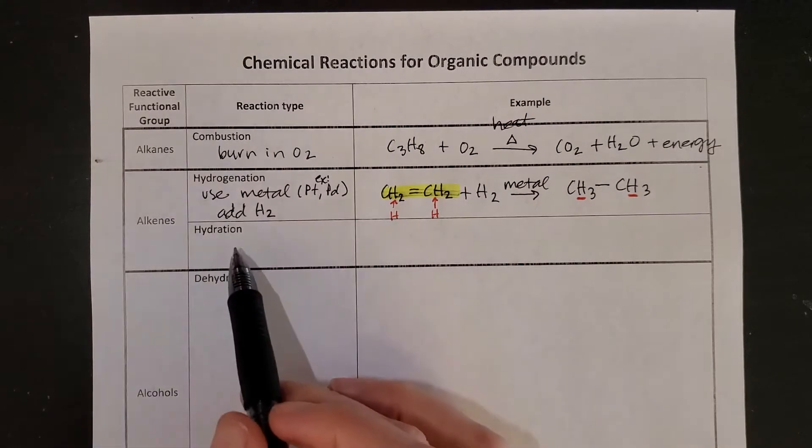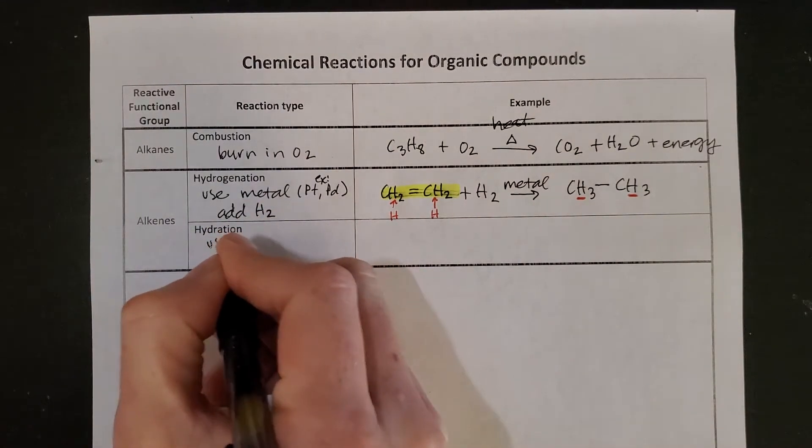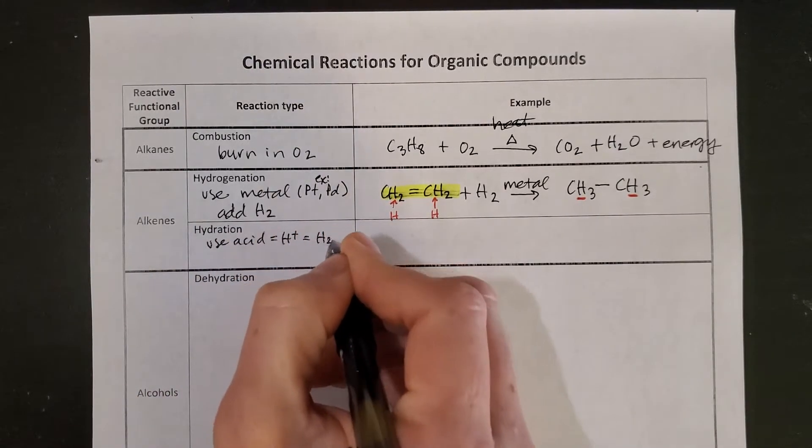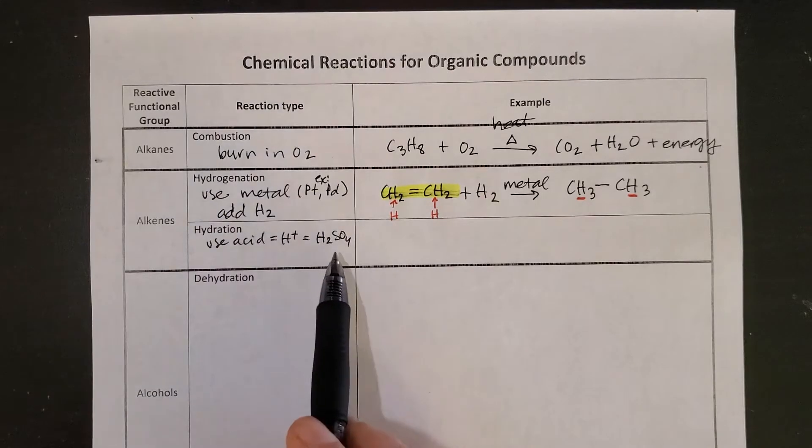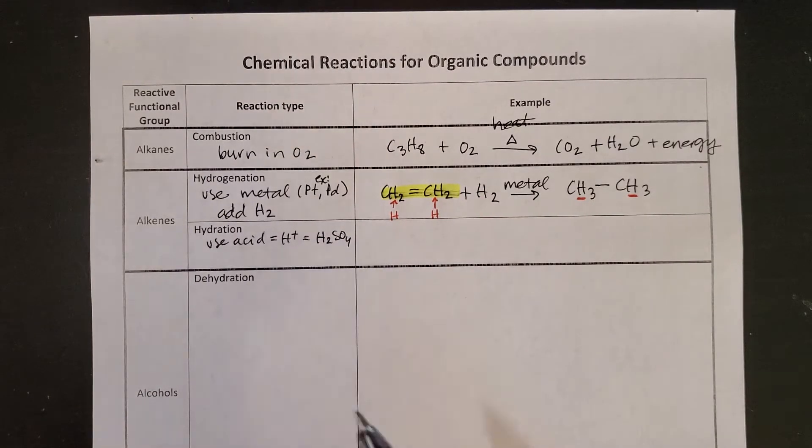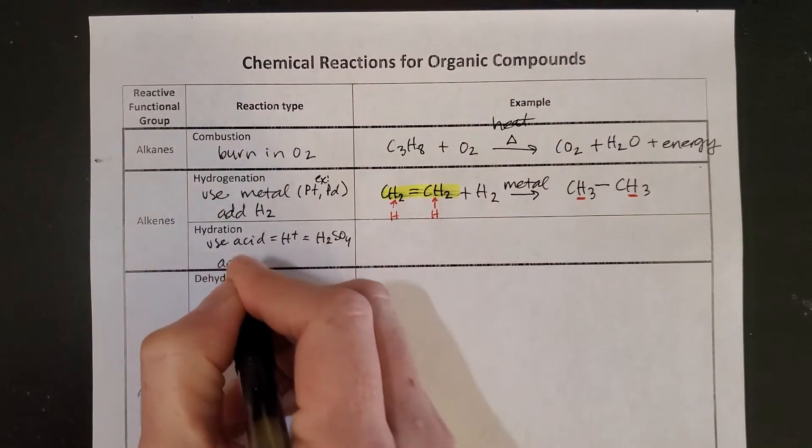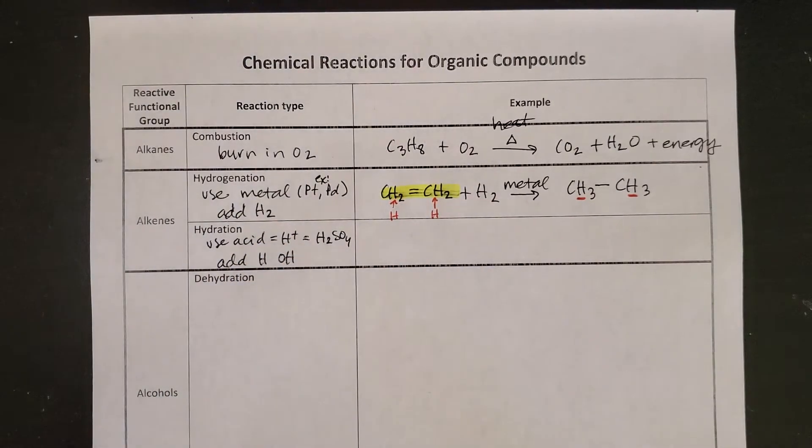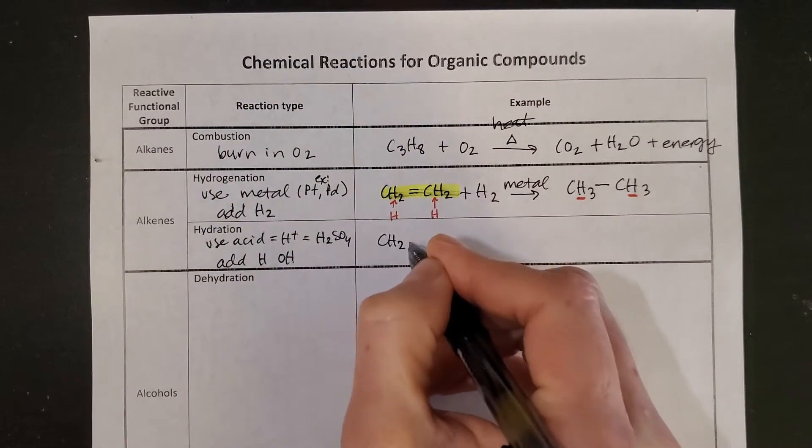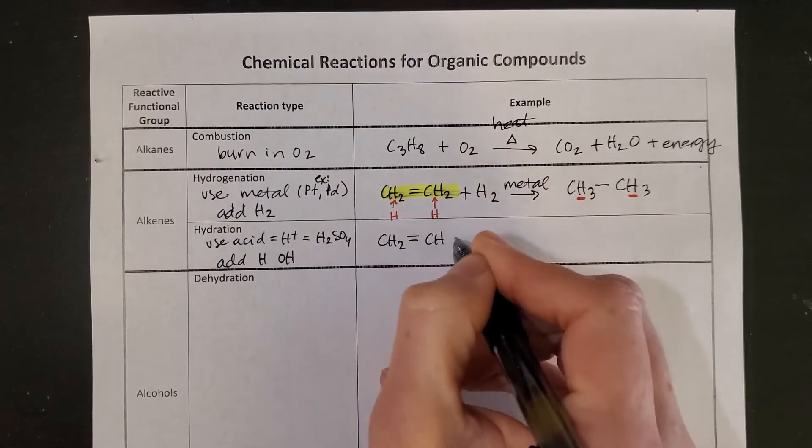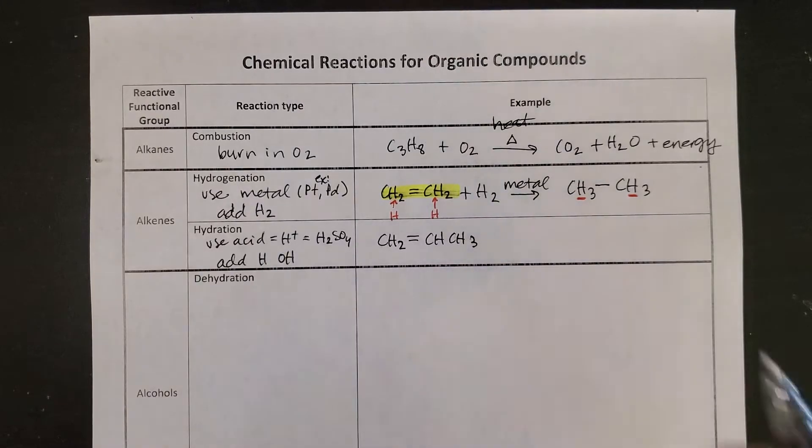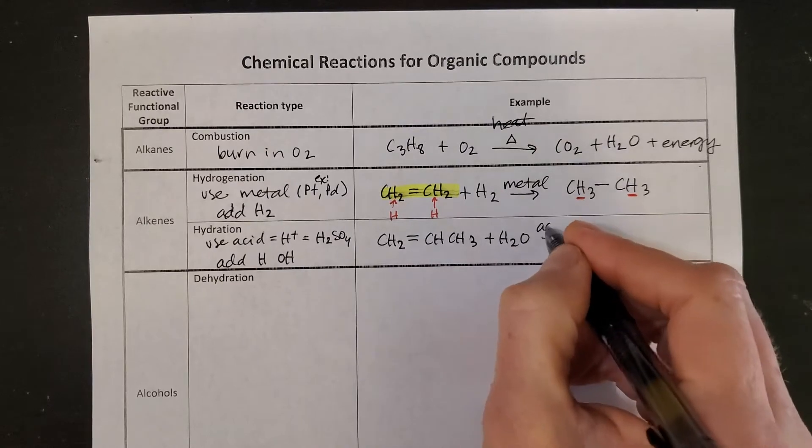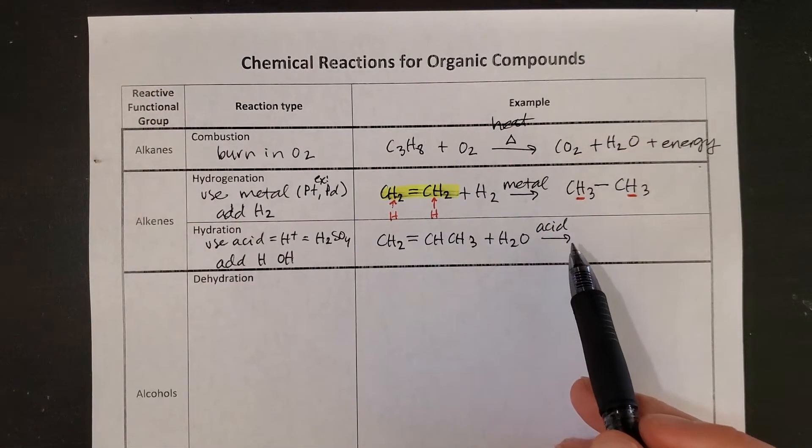Very similarly, a hydration reaction is going to use acid, and acid you might see written as H+. You might also see one of our common acid catalysts, which is H2SO4, sulfuric acid. In a hydration reaction, we're going to add water, which is going to be an H and an OH. So, similar compound, CH2, CH, we're going to make it a propene this time. You will, in a hydration reaction, always see plus water, and then you'll see acid in some form or another written over the arrow as the catalyst.